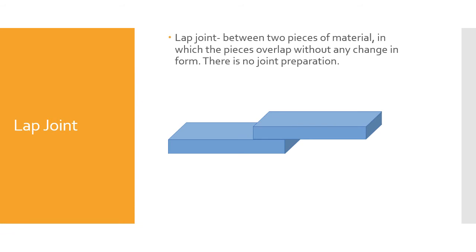Lap joint: a lap joint is between two pieces of material in which the pieces overlap without any change in form. There is no joint penetration for the most part in a lap joint.